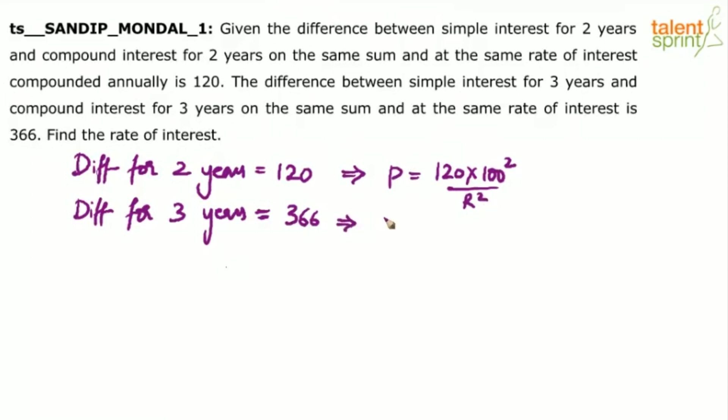And in case of 3 years, the principle P can be taken as difference D, 366 here, into 100 cubed by R squared into 300 plus R.